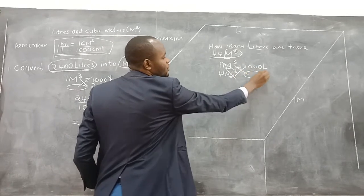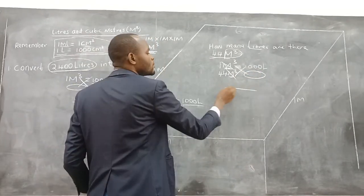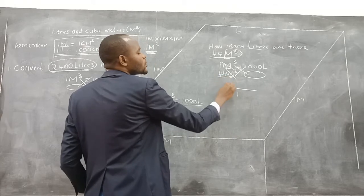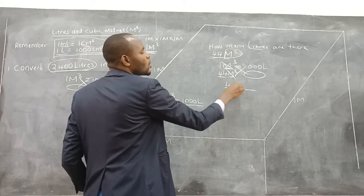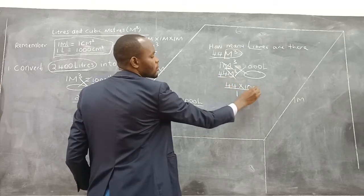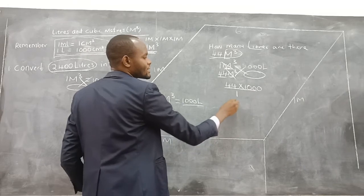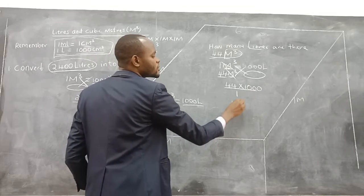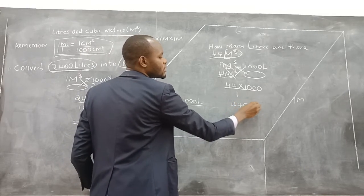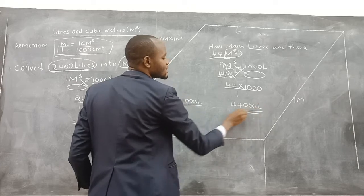Meters will cancel. Cross-multiply — the number cross-multiplies and there is nothing there, so we go below. We have 1. So we get 44 times 1,000. The answer is 44,000 liters.